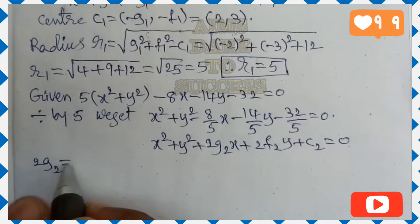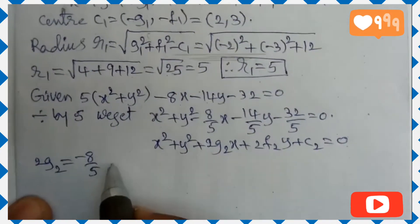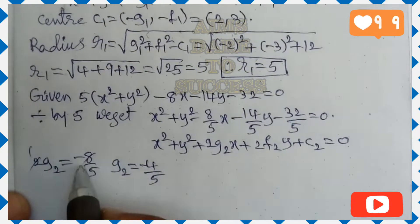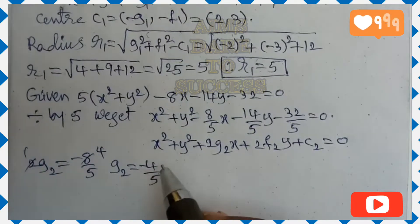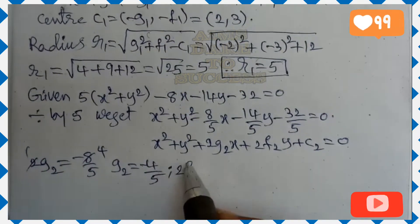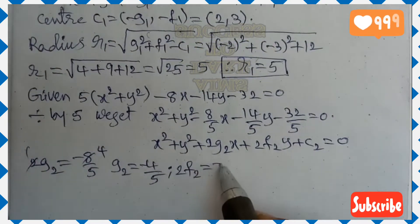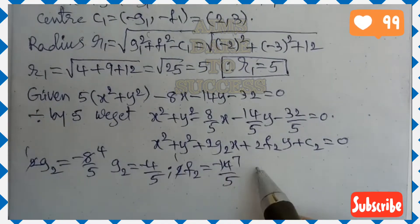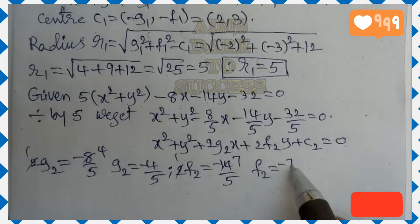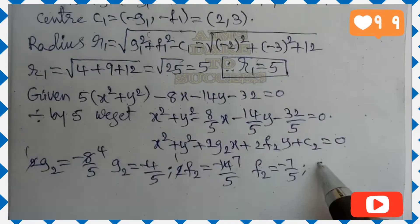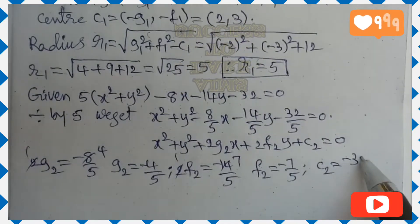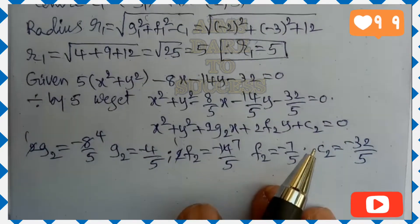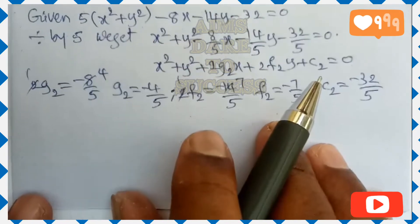Comparing x-coefficients: 2g₂ = −8/5, so g₂ = −4/5. Comparing y-coefficients: 2f₂ = −14/5, so f₂ = −7/5. Constant term: c₂ = −32/5.